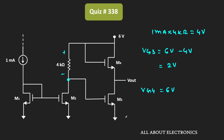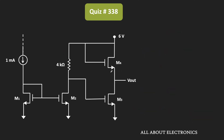For MOSFET M3, since the source terminal is at ground potential, VGS3 = VG3 − VS3 = 2 V − 0 V = 2 V. Similarly, for MOSFET M4, VGS4 = VG4 − VOUT, because the voltage at the source of M4 is equal to VOUT. Therefore VGS4 = 6 V − VOUT.